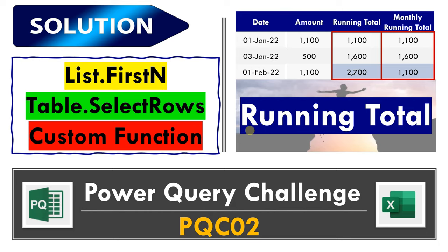I received one brilliant solution using the custom function from my friend Hisham Bintama from Algeria. Accordingly, I decided to start the first part of the solution, which is the running total using list.firstN. The second part will use table.selectRows, and at the end I'm going to present the full creative solution shared by Hisham Bintama using custom functions. As I'm presenting more than one solution, the video will be a little bit long. If you shared your solution with me, please wait till the end of the video — you will hear your name on the wall of fame.